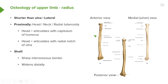The radius is shorter than the ulna and it's positioned more laterally. The head of the radius is going to articulate with the capitulum of the humerus, but importantly the head also articulates with the radial notch of the ulna.